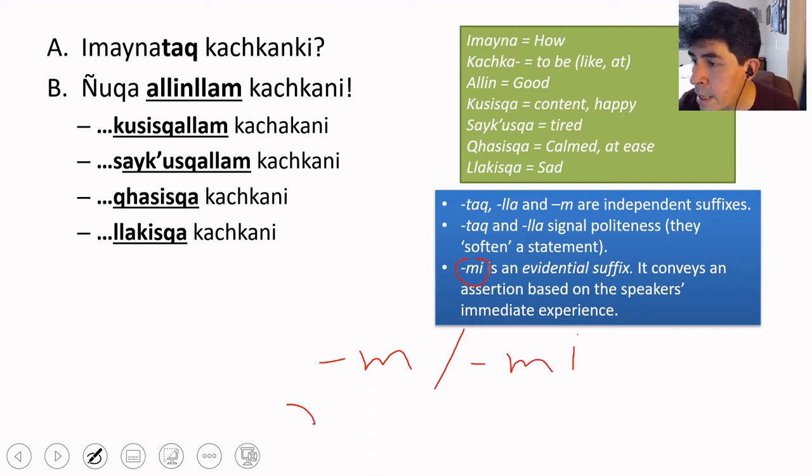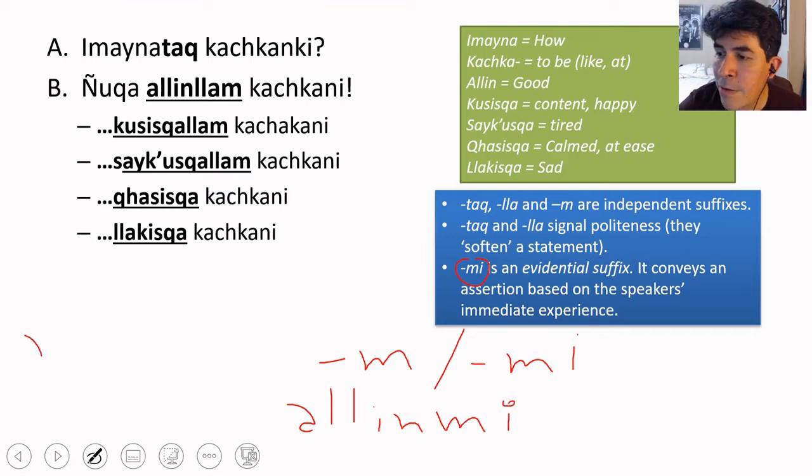So when you say the word al yin, the one that you're going to use is al yin mi. But if you have al yin lia, just fine, al yin plus lia, then you're going to use the em.